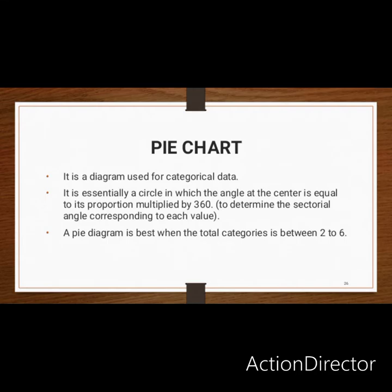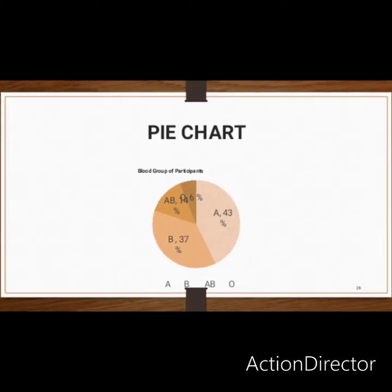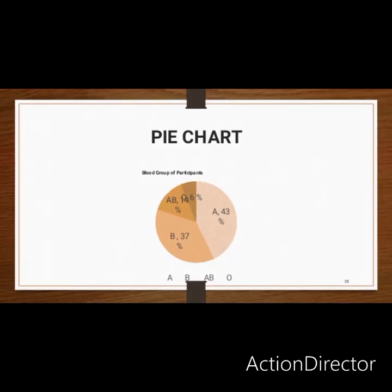The next method of graphical presentation for qualitative data is the pie chart. The pie chart is a diagram used for categorical data. It is essentially a circular figure that is partitioned, with each section representing a particular quantity or category of data.